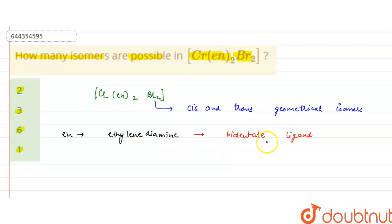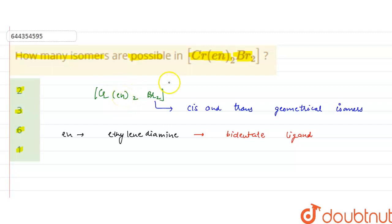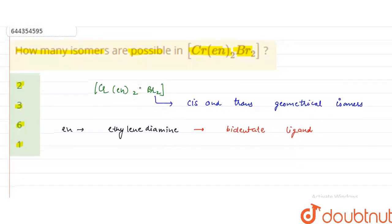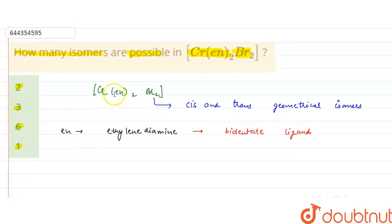Ethylenediamine is joined to the central metal atom with two of its atoms. This means the coordination number of chromium will be 6: 2 from the bromine ligands and 4 from the nitrogen atoms of the two ethylenediamine ligands.